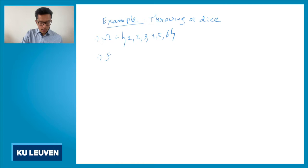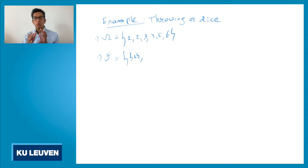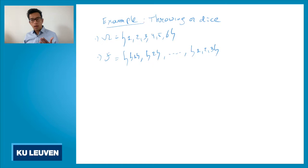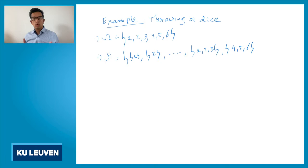What is F, the set of events? You have the event that you throw one — the set containing just one is in F. The set containing just two is also in F, and so on. But you also have the event {1, 2, 3} — the event where you throw something smaller or equal to three — or the event {4, 5, 6}, the event where you get something larger than three. So all possible subsets of omega are in the set F.